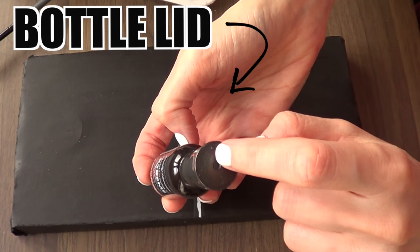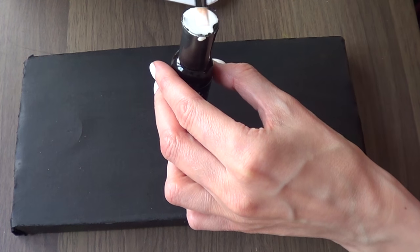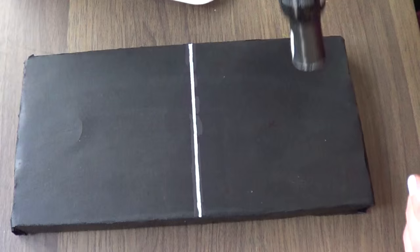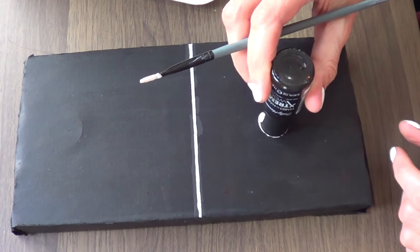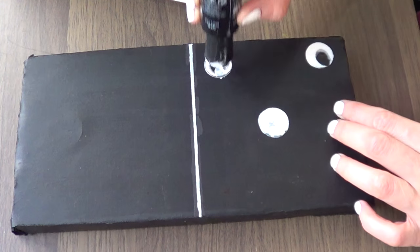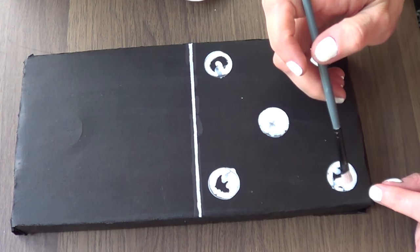For my dots, I'm going to be taking my bottle lid and I'm just going to paint the top of it with white, and I'm just going to simply add my dots on top of my marks, the ones I made with Sharpie.